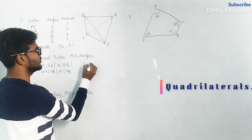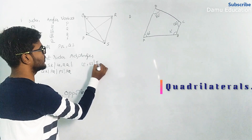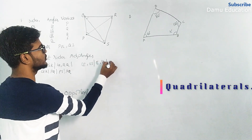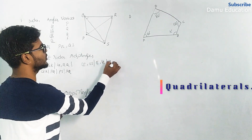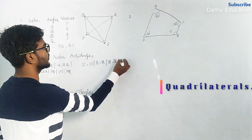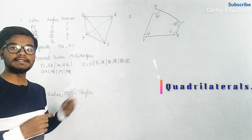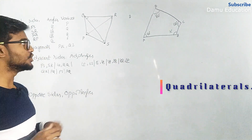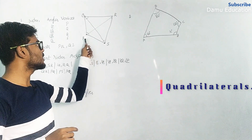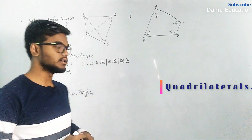The adjacent angles are: angle P and angle S, angle S and angle R, angle R and angle Q, and angle Q and angle P. These are the pairs of adjacent angles.